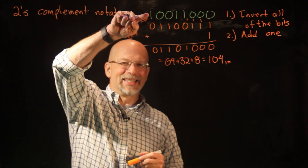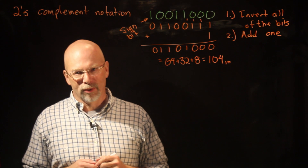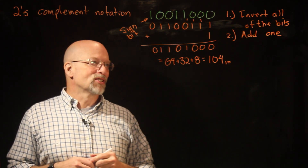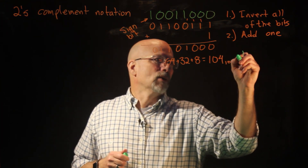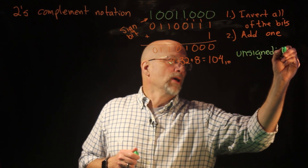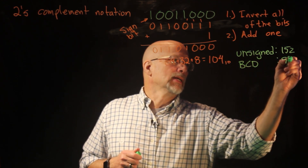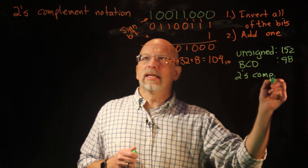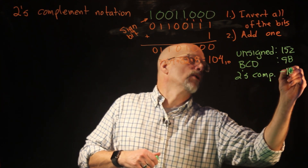What does that mean? That means this original pattern is equal to negative 104. So we had this pattern of ones and zeros, and we had three different things it could represent: in unsigned binary it equaled 152; in BCD it equaled 98; in two's complement it equaled negative 104.